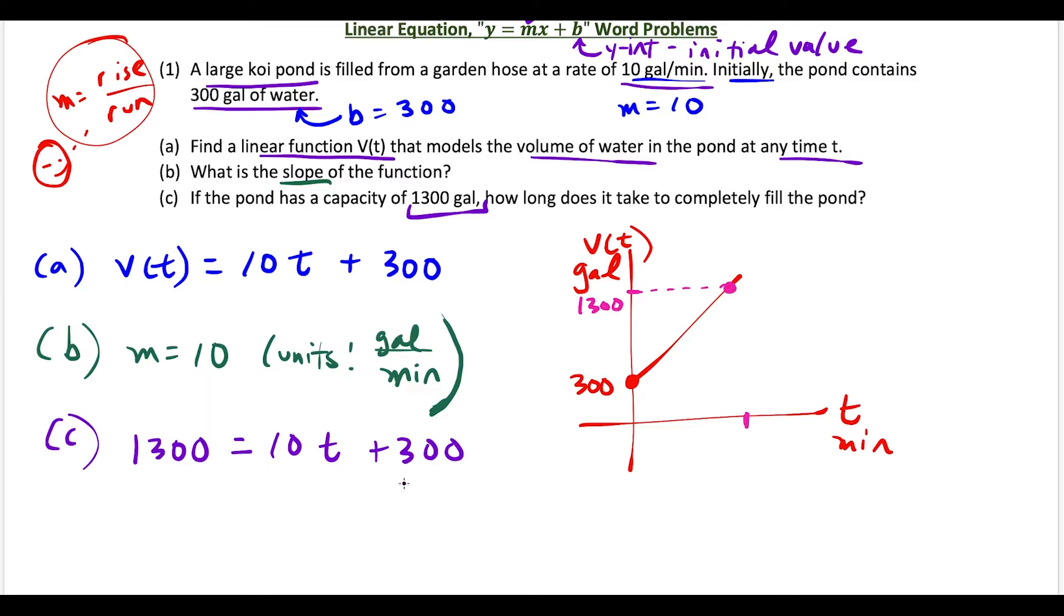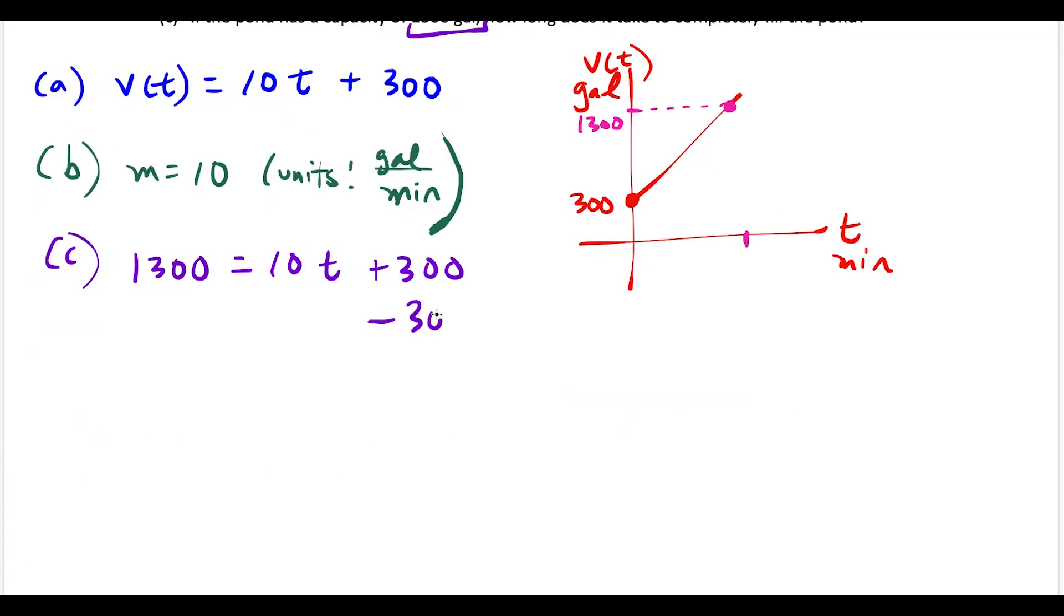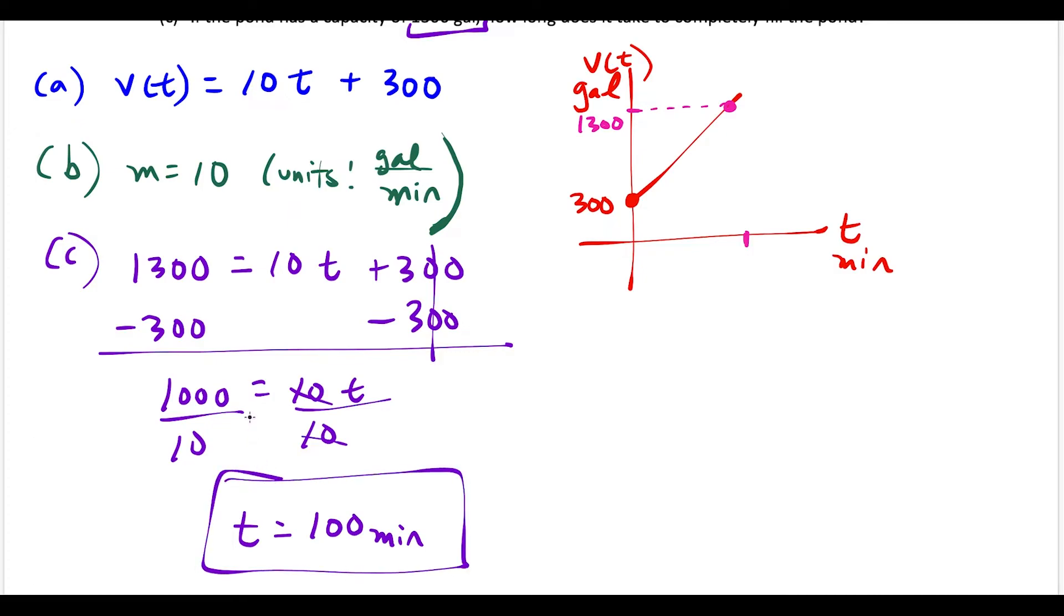So we have 1300 = 10t + 300. Now we just do a little algebra. Subtract 300 on both sides, and the +300 on the right cancels. Now we have 1000 = 10t. To solve for t, divide by 10. This tells us that t = 1000/10 = 100. And remember, the units are minutes.